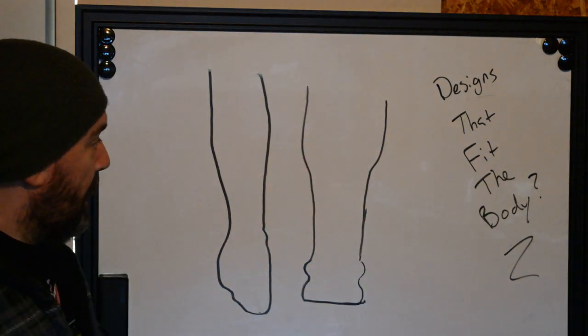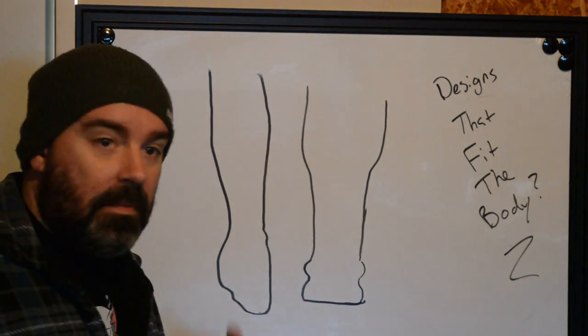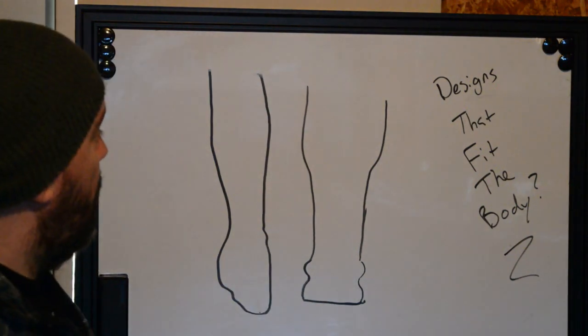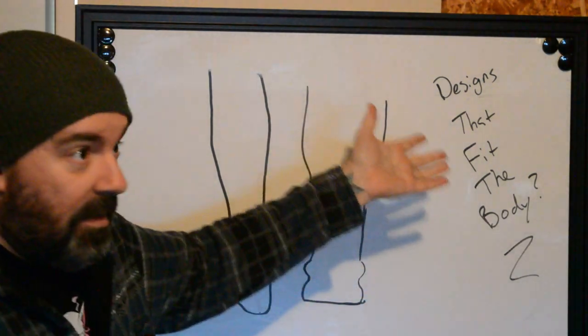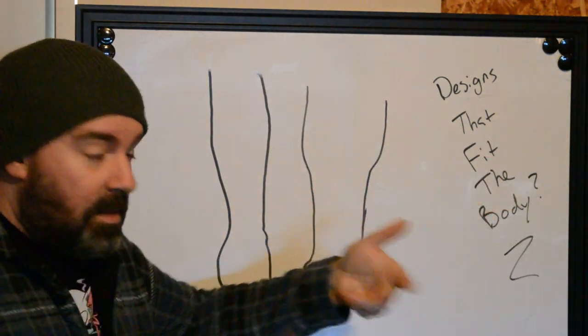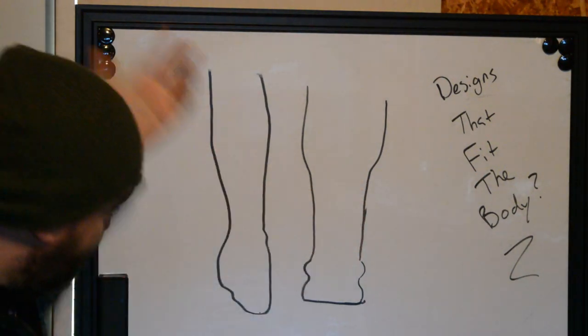More often than not I'm starting to find people coming into the tattoo shop that want something that looks good, moves with them, sits well on top of the skin, and is somewhat influenced or even not influenced by the musculature underneath. So that's basically a design that fits the body. So why or what or how can we identify good designs that fit the body? First things first, look at the body.